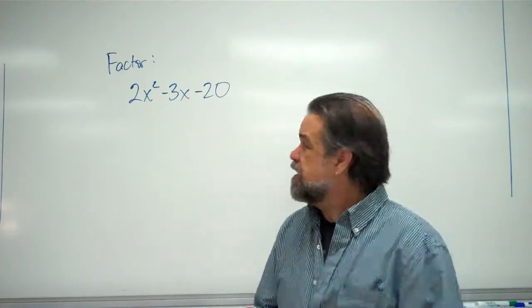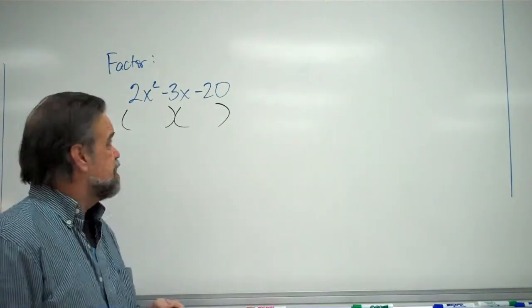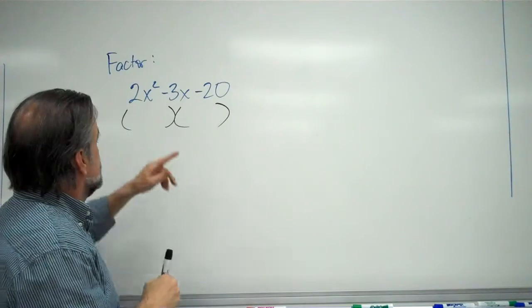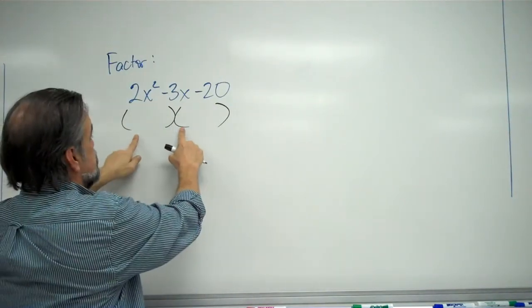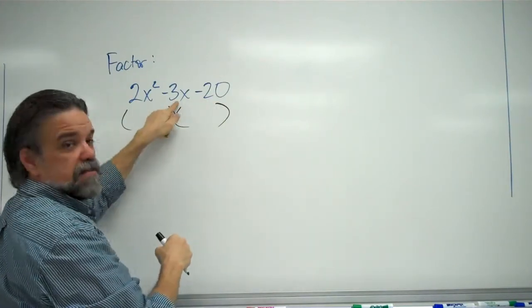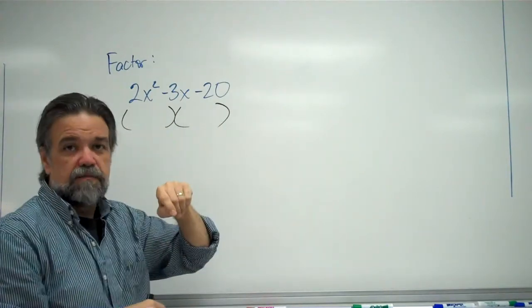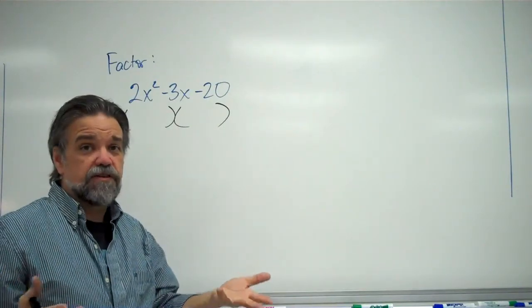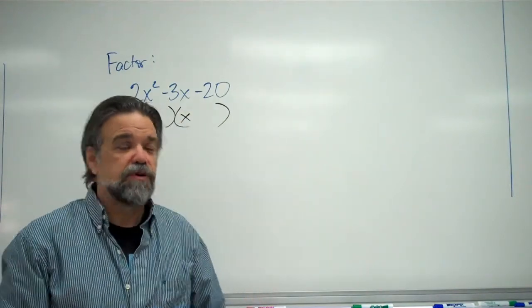But, we're factoring, right? So, let's just draw our parentheses for the factors. And I know from past experience that this is always the product of the first two terms, this times this. This is always the product of the last two terms. And this is the combination of this product and this product. My outside and my inside. So, fortunately, there's only one way to get 2x squared. And that is 2x times x. All right. So, I'm feeling pretty good.